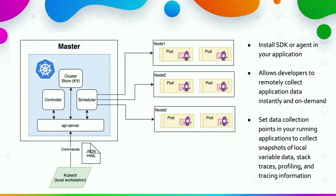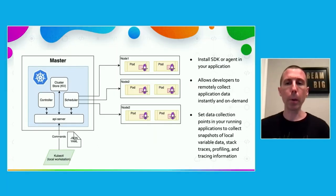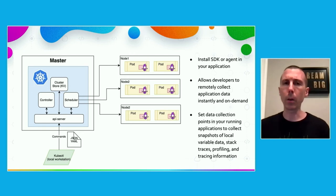Just a quick look at how this may be deployed — this is an example with Kubernetes. A lot of these tools, from OpenTracing to dynamic observability tools, often have an SDK or agent you install within your application. In Kubernetes, it could be within a pod in your cluster. They allow developers to remotely interact with the application and collect data on demand by setting data collection points within a running application to capture snapshots of data — things like local variable values, stack traces, profiling information, and tracing information — on demand whenever you need it.